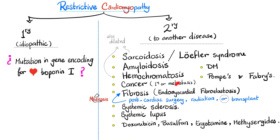Breast cancer and lung cancer metastasizing to the heart are examples. Fibrosis — or endomyocardial fibroelastosis — involves elastic fiber accumulation in the endocardium and myocardium. Fibrosis can occur after cardiothoracic surgery, after radiation exposure near the heart, and after heart transplant.